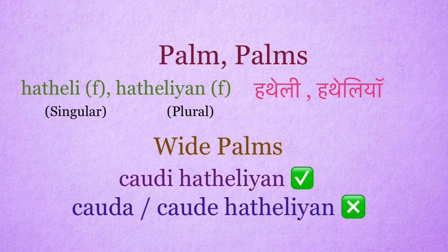Palm: hatheli. Palms: hatheliyan. It's a feminine word. Wide palms: right use is chowdi hatheliyan. Wrong use: chowda or chowde hatheliyan.